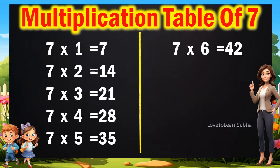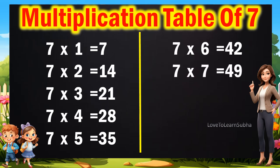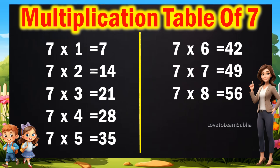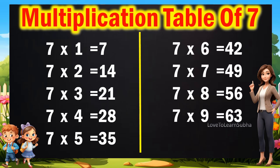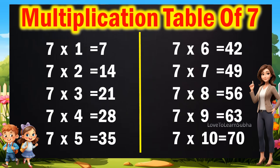7 sixes are 42, 7 sevens are 49, 7 eights are 56, 7 nines are 63, 7 tens are 70.